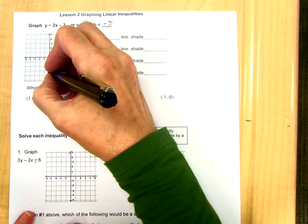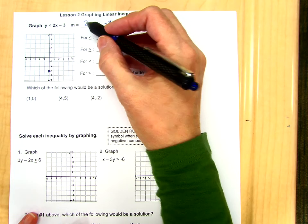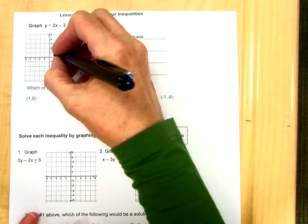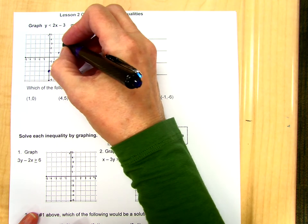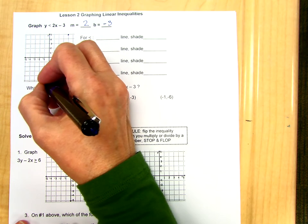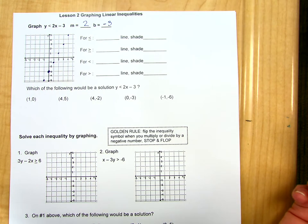We're going to go to negative 3 on the y-axis and graph that point. And then we'll use the slope to get some more points. So if we go up 2 over 1, up 2 over 1, up 2 over 1, and we continue until we cannot continue anymore. We go down 2 and left 1 to get that last point.